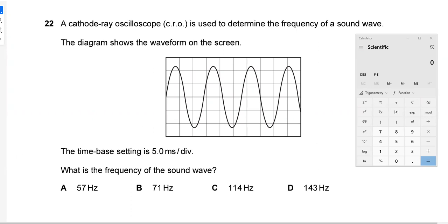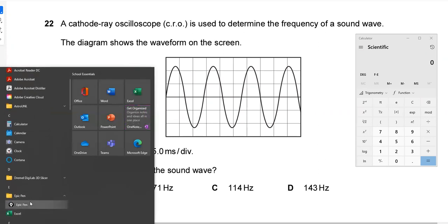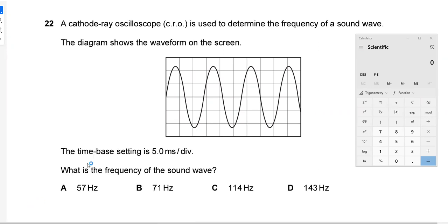All right. First it becomes clear to me that I need my writing tool. So let's start with the information that's given. We've got 5.0 milliseconds per division. Now a millisecond is a thousandth of a second, so the prefix milli you can just transfer that to 10 to the negative 3. So we'll rewrite this as 5 by 10 to the negative 3 seconds per division.